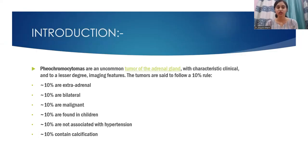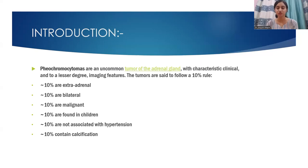Introduction: Pheochromocytomas are an uncommon tumor of the adrenal gland with characteristic clinical and, to a lesser degree, imaging features. The tumors are said to follow a 10% rule: 10% are extra-adrenal, 10% are bilateral, 10% are malignant, 10% are found in children, 10% are not associated with hypertension, and 10% contain calcifications.